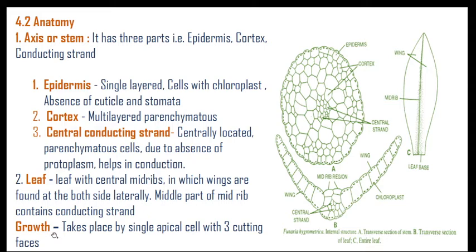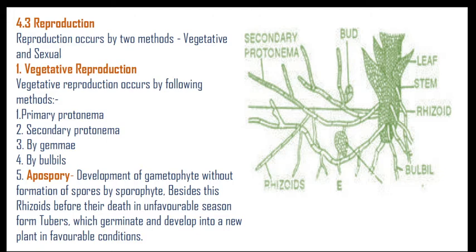Growth takes place by a single apical cell with three cutting faces. Like a meristem, these three cutting faces are always in a position to grow many more cells.